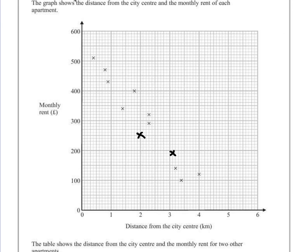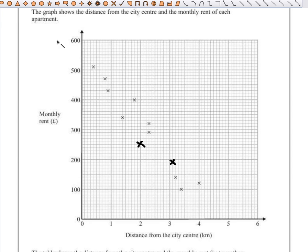Now, on any scatter graph, it's always a good idea if you draw a line of best fit. This doesn't have to be completely accurate as long as it roughly goes through as many of the points as possible, so that you can use it to predict missing values.